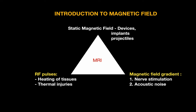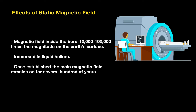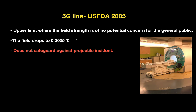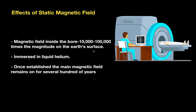The static magnetic field is produced by coils in the MRI, and the magnetic field inside the bore is approximately 10,000 to 100,000 times the magnitude on the Earth's surface. These coils are immersed in liquid helium to decrease resistance, and once the main magnetic field is established, it remains on for several hundreds of years.